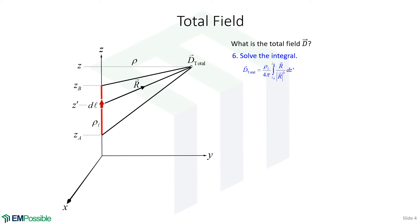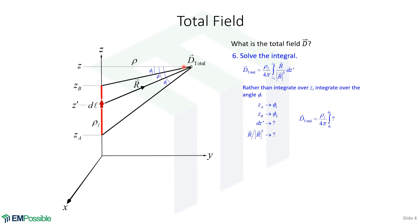This is the integral from the previous slide. To solve it, I think it's easier to integrate over an angle φ than over Z, though both are possible. We need to put the entire integral in terms of angle φ. Let's define φ as the angle down from the projection of our observation point over to the Z axis. To convert this integral, we'll need: Z_A expressed as φ₁, Z_B as φ₂, DZ prime written in terms of Dφ, and the ratio R vector over |R|³ expressed in terms of φ. Then we convert everything from Z to φ.